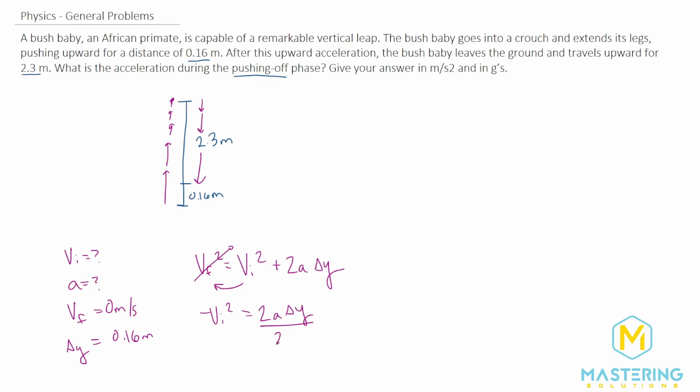If we divide both sides by 2 delta y, that will give us acceleration equals negative v_i squared divided by 2 delta y. But we need the initial velocity, so we have to use the other information, the 2.3 meters, to figure that out so we can plug it in here.